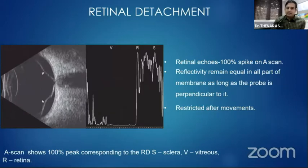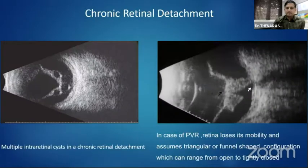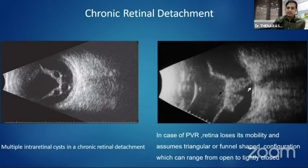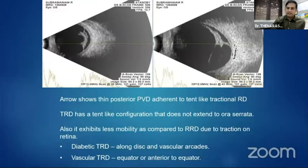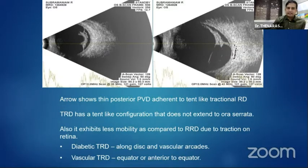In retinal detachment, you can see a 100% spike on A-scan. In chronic retinal detachment, multiple intra-retinal cysts may be seen. Depending on PVR formation, it could be open funnel or closed funnel configuration. In diabetic tractional retinal detachment, a tent-like configuration is seen extended mostly in the posterior pole, and a tabletop configuration may also be present.